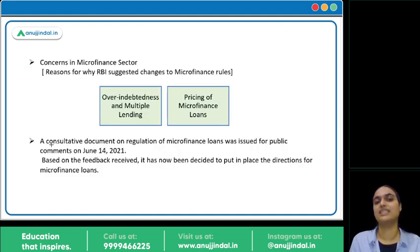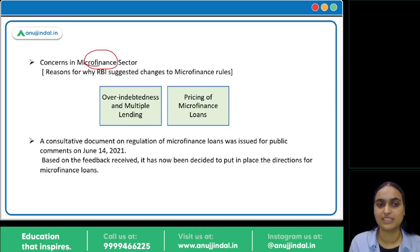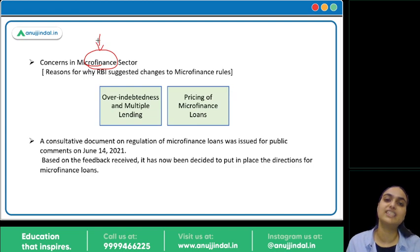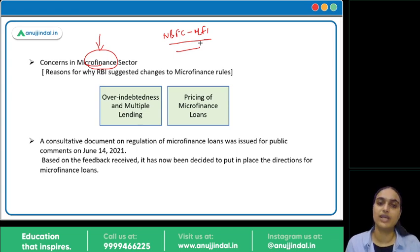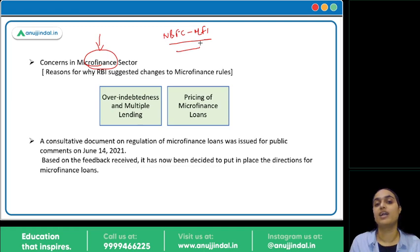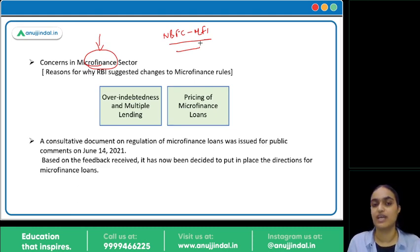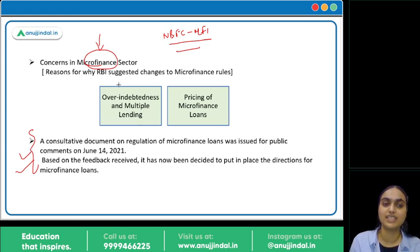There are growing concerns in the microfinance sector in India. Previously, directions were only for NBFC-MFIs, but concerns arose that led RBI to release a consultation paper stating this sector needs better regulation. Proposals included bringing all regulated entities under these directions, and making changes regarding interest rates and loan repayment limits. Based on those proposals, the final directions are now out.